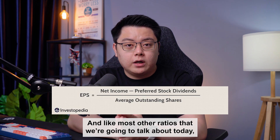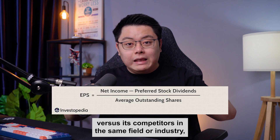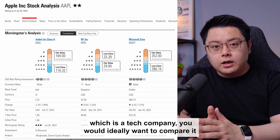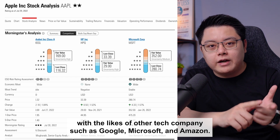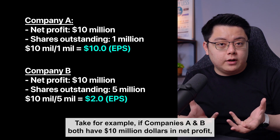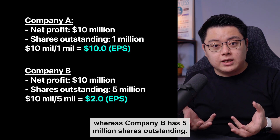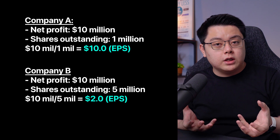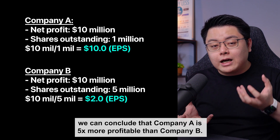EPS is best used when comparing companies versus its competitors in the same field or industry. For example, if you are looking at Apple's EPS, which is a tech company, you would ideally want to compare it with the likes of other tech companies such as Google, Microsoft and Amazon. If company A and B both have $10 million in net profit but company A only has 1 million shares outstanding whereas company B has 5 million shares outstanding, then company A has an EPS of $10 per share while company B has an EPS of $2, meaning company A is 5 times more profitable.